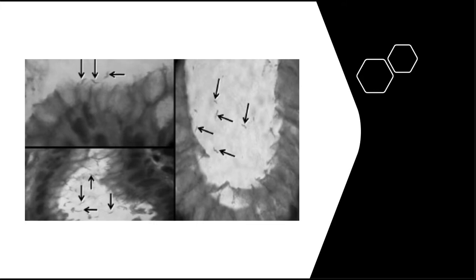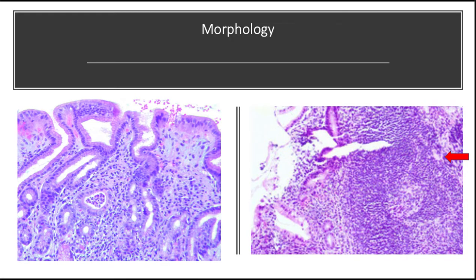Gastric biopsy specimens generally demonstrate Helicobacter pylori in infected individuals, concentrated within mucus overlying epithelial cells in the surface and neck regions. The inflammatory reactions include variable numbers of neutrophils within the lamina propria, some assuming an intraepithelial location and accumulating in the lumen of gastric pits to create pit abscesses. The superficial lamina propria includes large numbers of plasma cells, often in clusters or sheets, as well as increased numbers of lymphocytes and macrophages. Lymphoid aggregates with germinal centers are frequently present and represent mucosa-associated lymphoid tissue with the potential to transform into lymphoma.